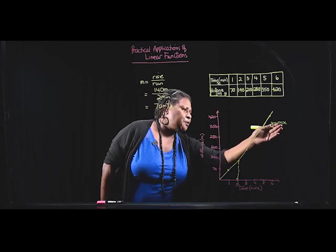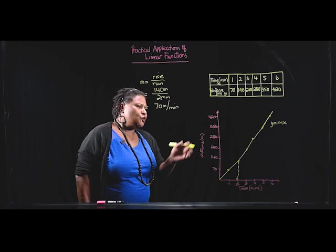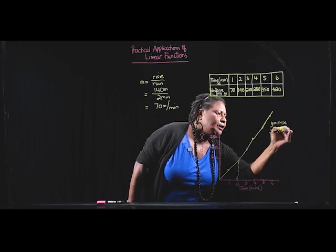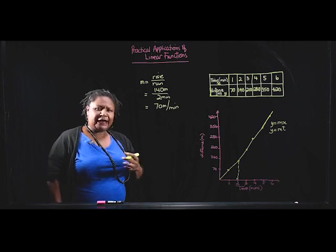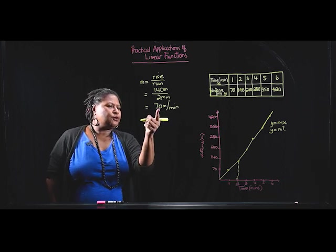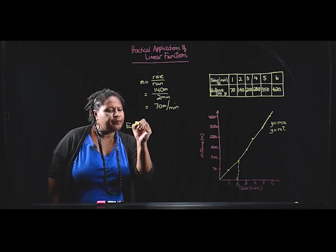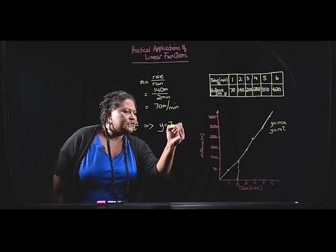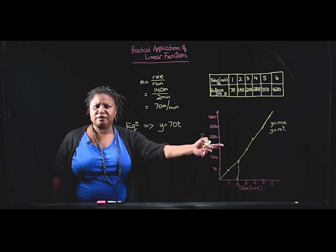Now, y equal to mx is the form of the equation. Gradient is the average speed. And x, in this case here, is the time taken. So, instead of writing x, we will write y equal to mt. So, gradient multiplied by the time taken. So, equation for this line, back to our gradient here, is 70. So, the equation is y equal to 70t. That's the equation of our line.